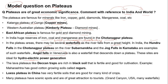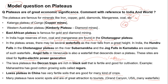Next is hydroelectric power generation. Plateaus like the Deccan Trap have black soil on which there is good cultivation of cotton, making them important for agricultural purposes. The Loess Plateau in China has very fertile soil and is good for many kinds of crops. Many plateaus, such as the Grand Canyon in the USA, are a great attraction for tourism. In your answer, mention both Indian and world examples for each point.